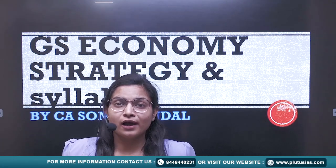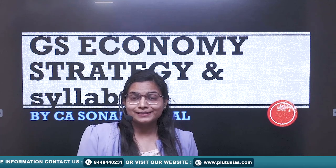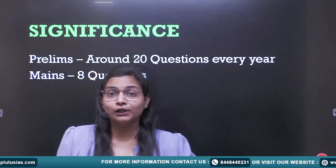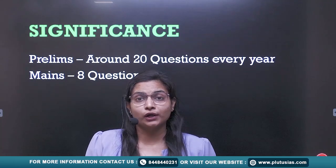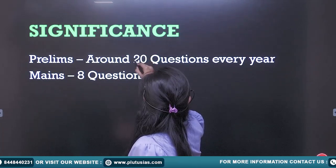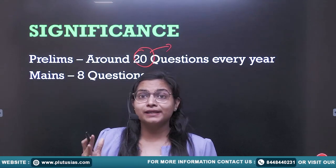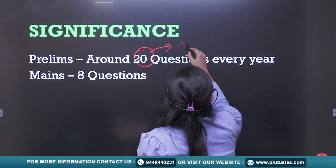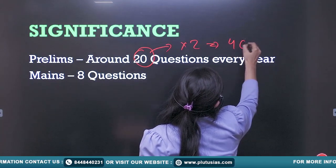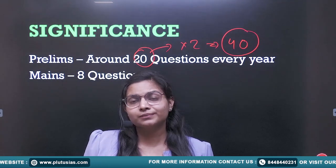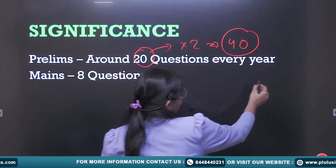First you have to see what is the significance of a topic or subject in the prelims, mains, and interview stage. Let's see how many questions are being asked in prelims from economics — around 20 to 22 questions. You can multiply by two to reach 240 marks, and recent prelims cut-offs have been around 80 to 90 only.